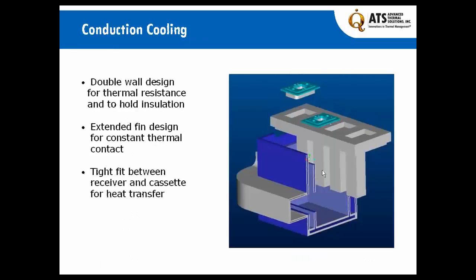In a more detailed CAD view of the system, you can see the cassettes where the sample fits on the inside. The cassette drops into the cassette receiver, which contacts it on five sides for conduction cooling. The cassette receiver is then dropped into the reservoir, which allows fluid to conduct into the cassette receiver fins. There's a double-walled design that allows for insulation to be placed in this area, which helps keep the temperature lower for a longer period of time when used in a lab environment.